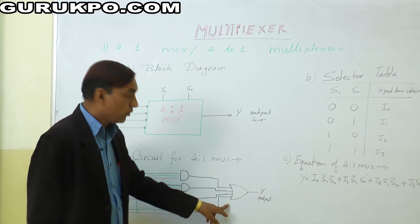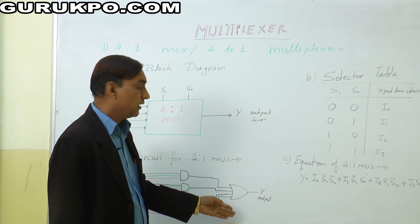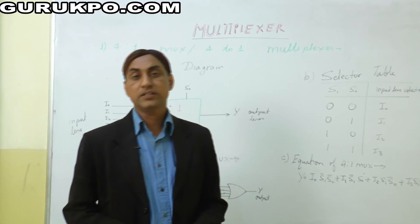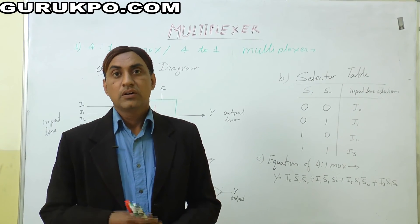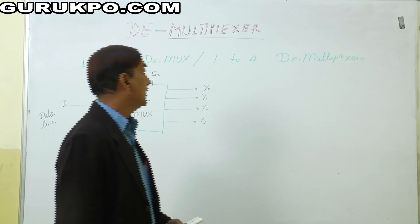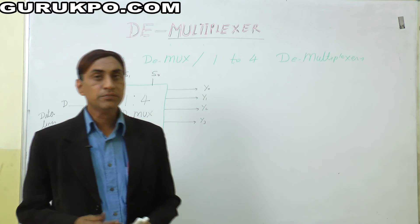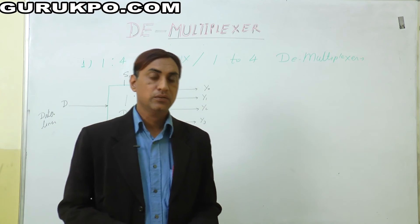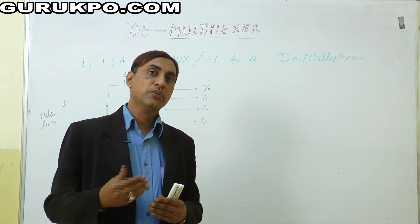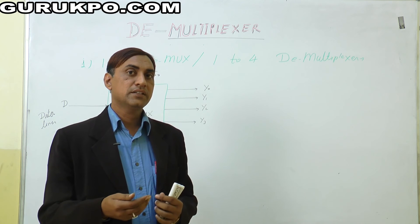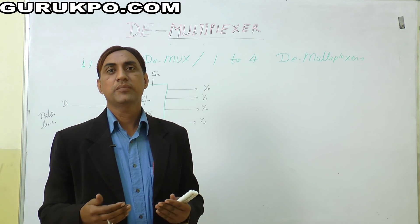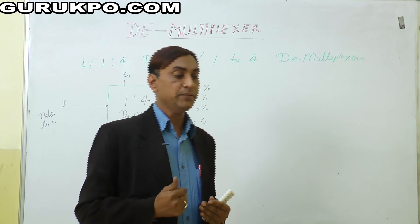After the AND operations, all outputs go to an OR gate to get the final OR output Y. So in a multiplexer, this is the combination of OR gates and AND gates. Now we are talking about the demultiplexer. The demultiplexer is the reverse process of the multiplexer, also called a data distributor. One input line comes in and more output lines are generated.